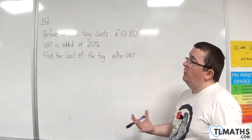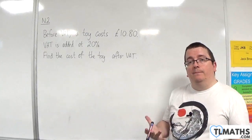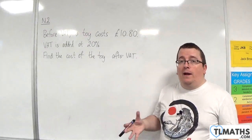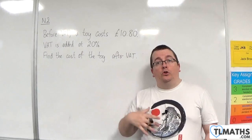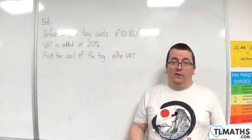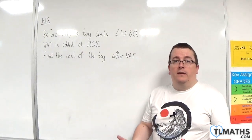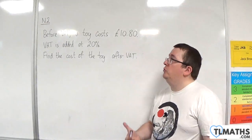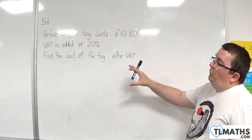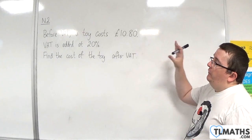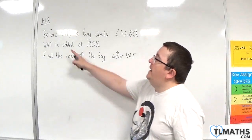In this video I want to go through a problem that involves VAT. VAT is value-added tax — it is a tax added to goods and services and it's one of the main ways the government gets its money alongside income tax and national insurance. So, before VAT a toy costs ten pound eighty, VAT is added at twenty percent.